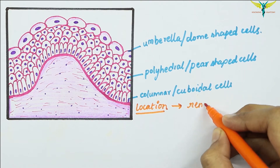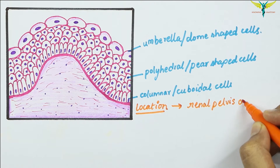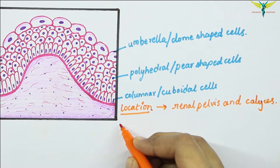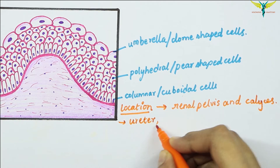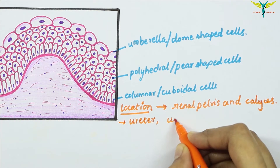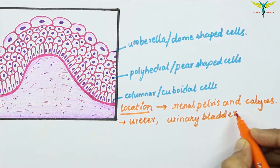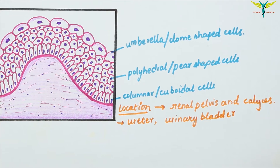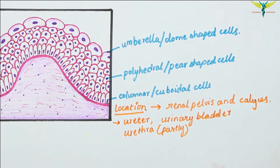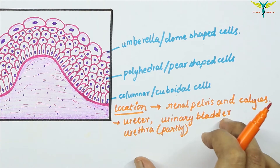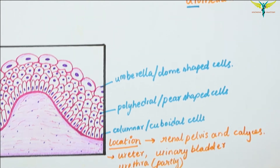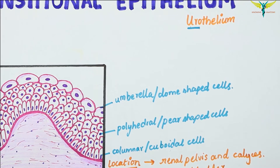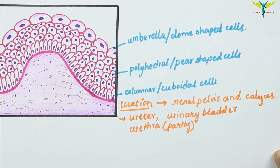The transitional epithelium is found in the renal pelvises and the calyces, in the ureter, in the urinary bladder, and in part of the urethra. Because of this distribution, it is also called urothelium.